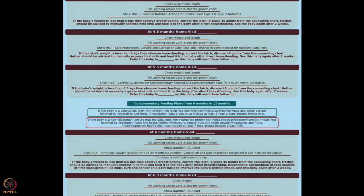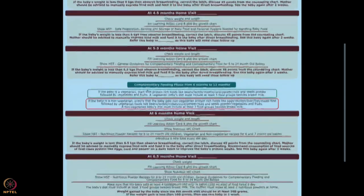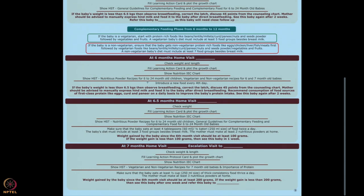At five and a half months, start with complementary feeding guidelines and complementary food tutorials — only to watch. Do remind her to wait until the baby completes six months before starting complementary foods. At six months, check weight and length, fill out the learning action protocol and growth chart, and show the nutrition IEC chart.